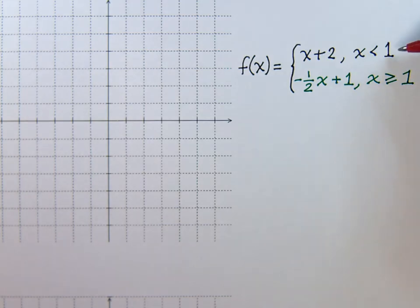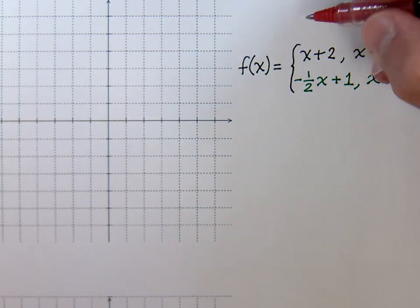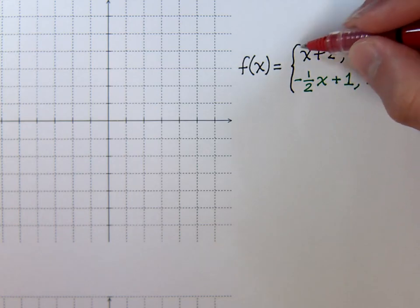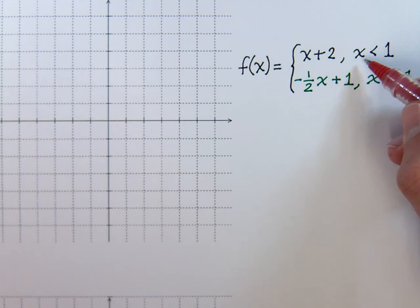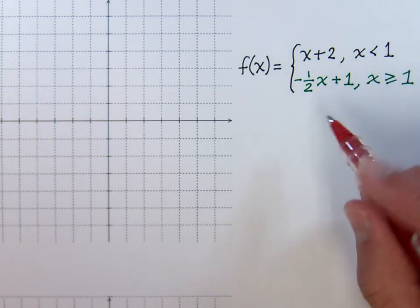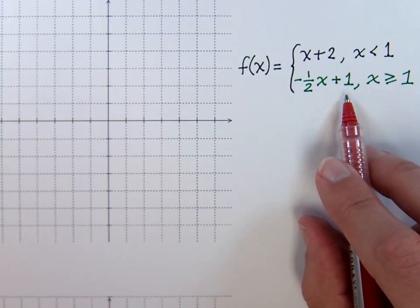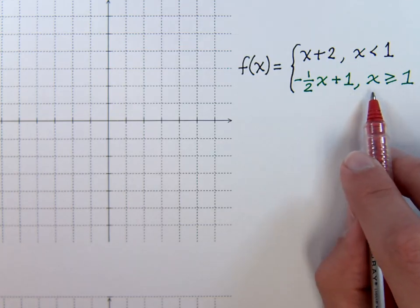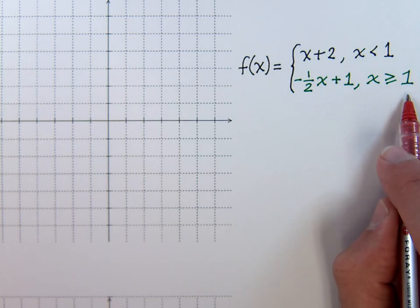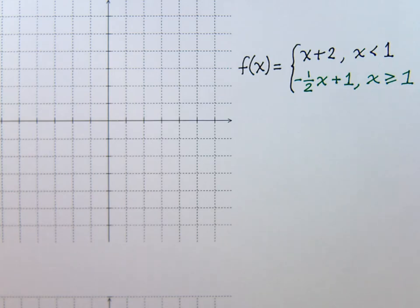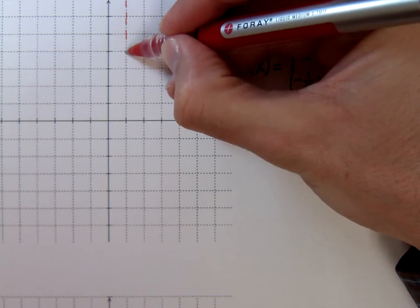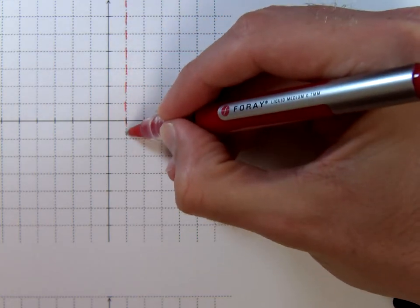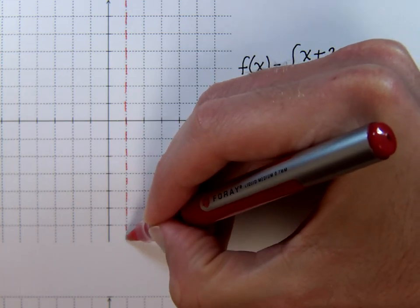Instead, we need to look at these conditions right here. This is the piece that we're looking at, x plus 2, but we can only use that under the condition where x is less than 1. Likewise, the other piece, negative 1 half x plus 1, can only be used for values of x greater than or equal to 1. So it seems that at 1 is where we change the way this function behaves. What might be good for us to do is to draw a little dashed vertical line right here at 1, because this is where our function changes the way it behaves.